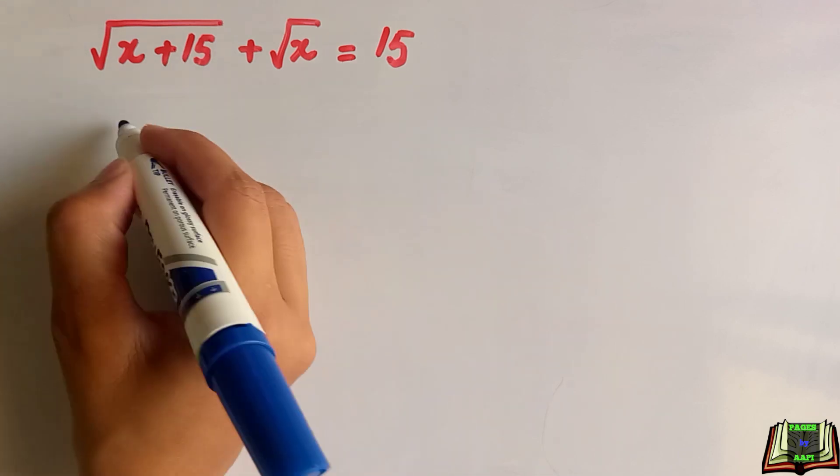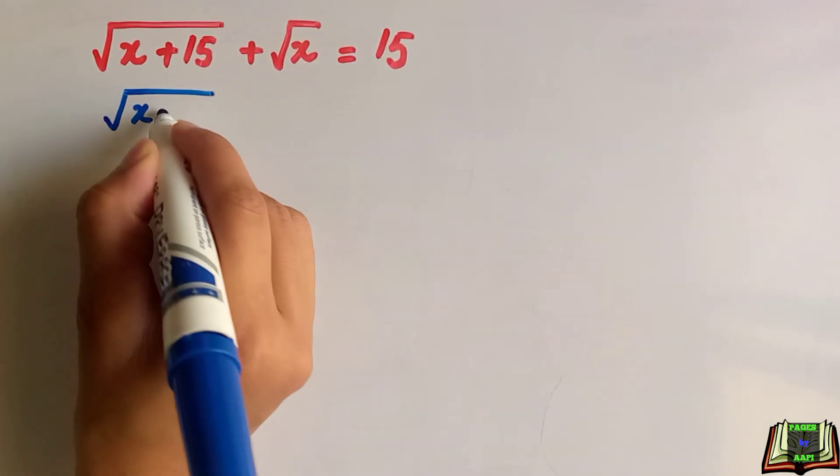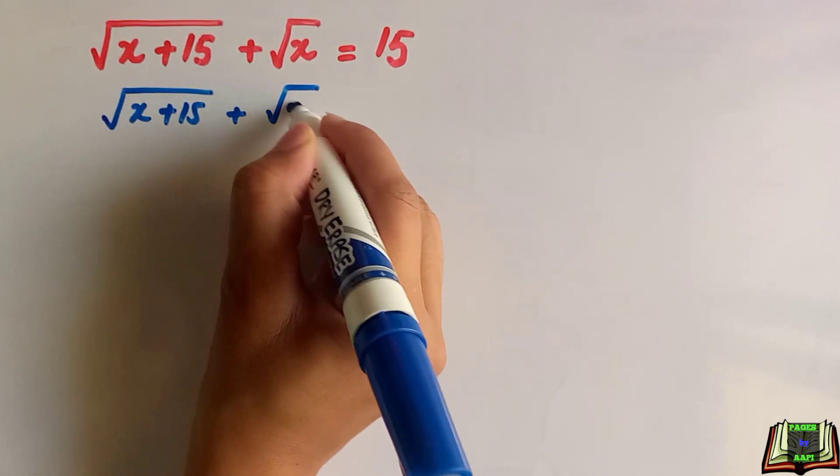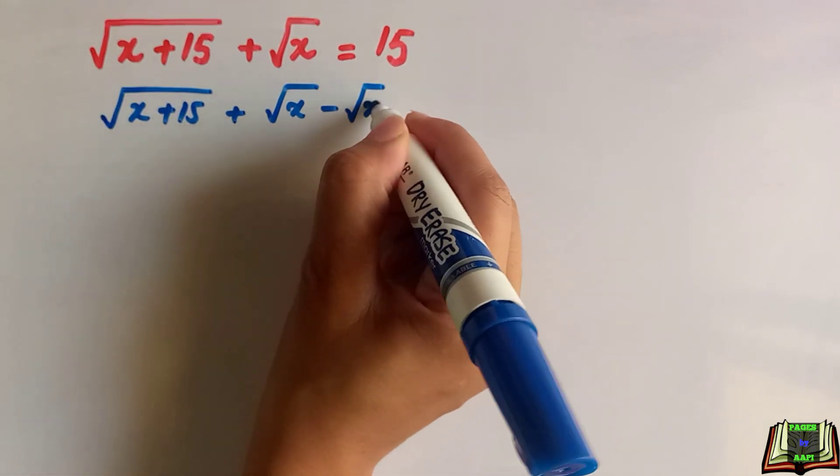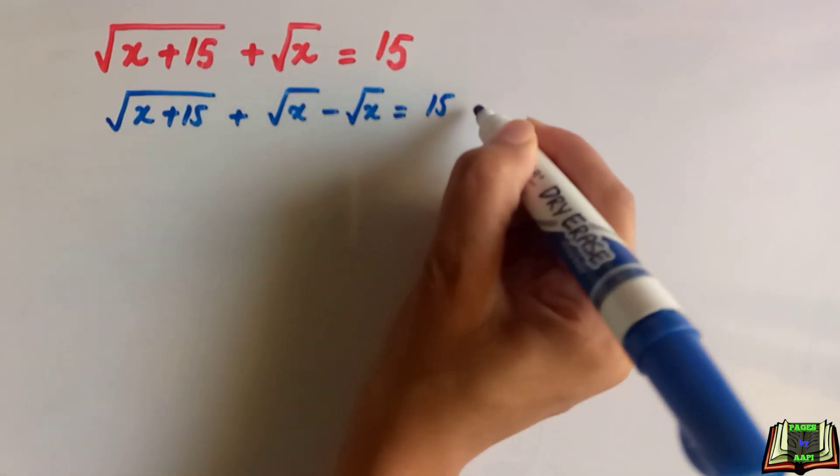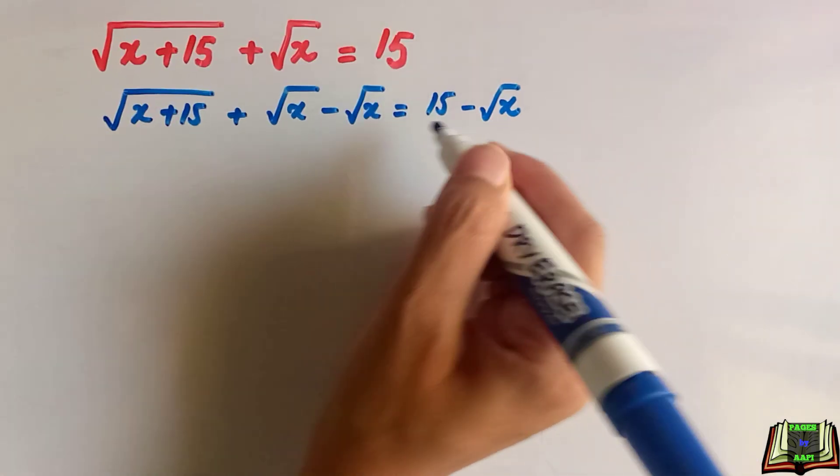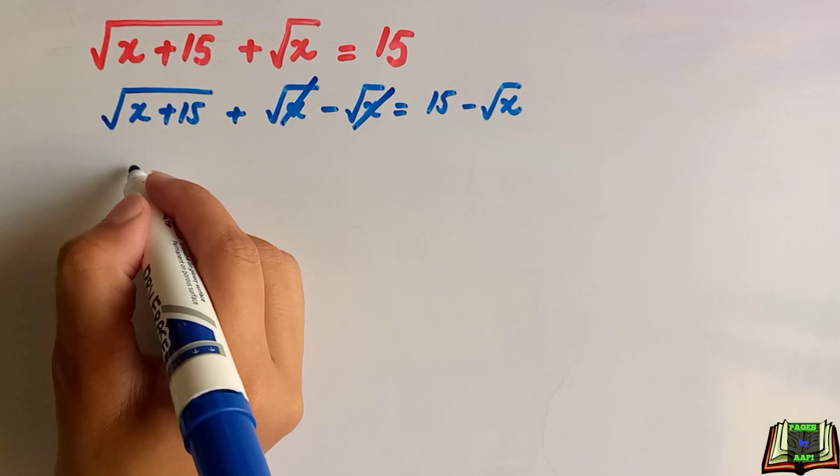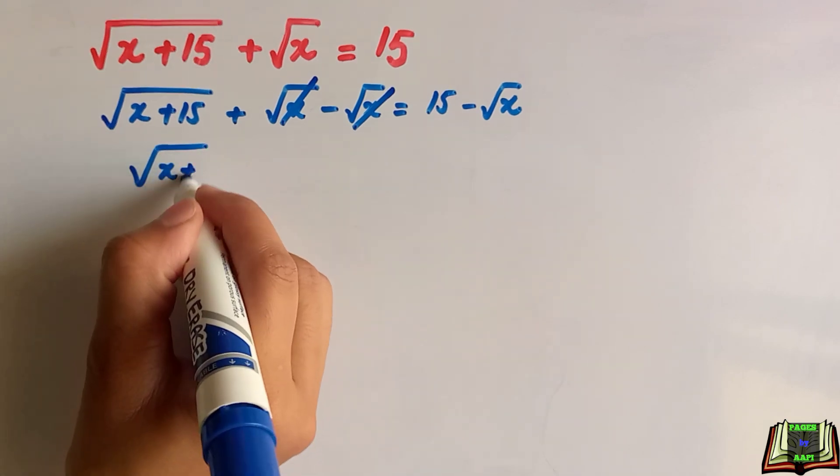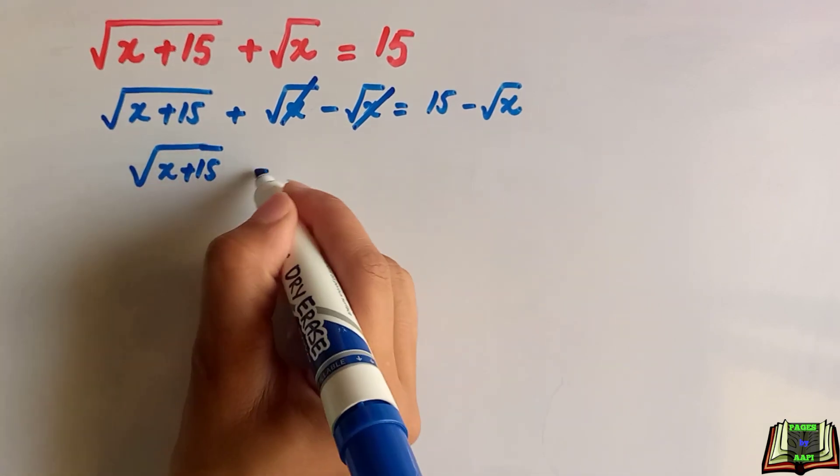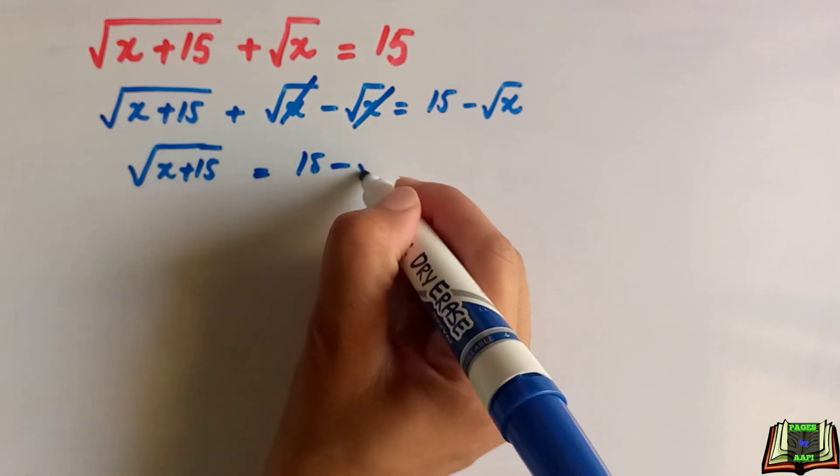First of all we will subtract square root of x on both sides. Square root of x minus square root of x is equal to 15 minus square root of x. On the left hand side this positive and negative square root of x cancel out. We have square root of x plus 15 is equal to 15 minus square root of x.